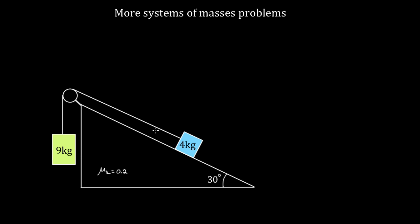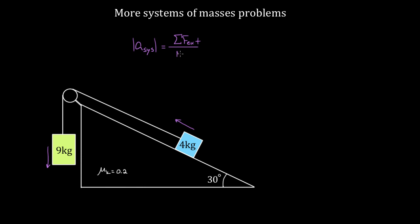If you tried to solve this the hard way, it'd be challenging — you're gonna have multiple equations with multiple unknowns if you try to analyze each box separately using Newton's second law. But because these boxes have to accelerate at the same magnitude of acceleration, we're just gonna be able to find the system's acceleration. Because our rope's not gonna break or stretch, these accelerations are gonna have to be the same, so we treat these multiple objects as if they were a single mass and divide the external forces by the total mass.